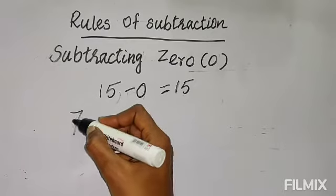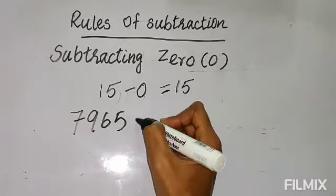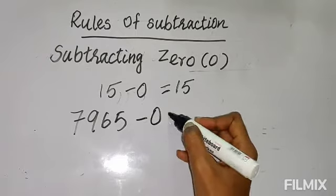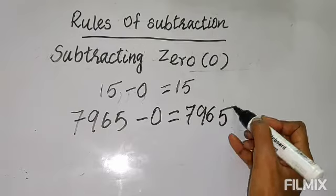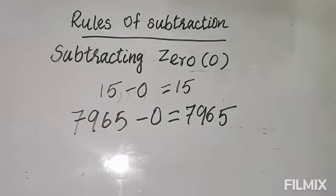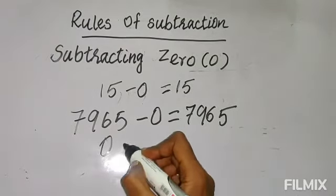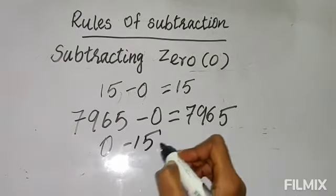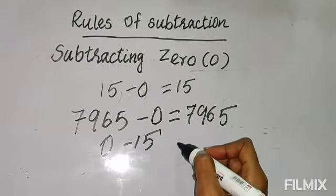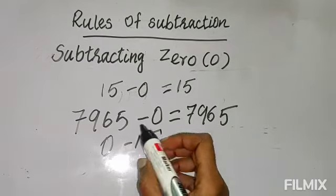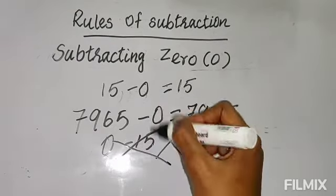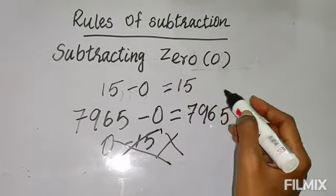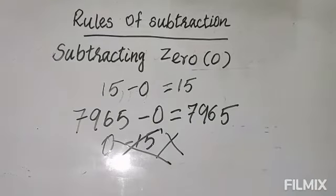It can be any number, any bigger amount — a 4-digit or 5-digit number. If you minus 0, the difference is the number itself. But 0 should not come in the first place. You cannot write 0 minus 15 — from nothing you cannot minus 15. From 15 you can minus 0. You can minus 0 from any number, but the difference will be the number itself. That is the first rule.